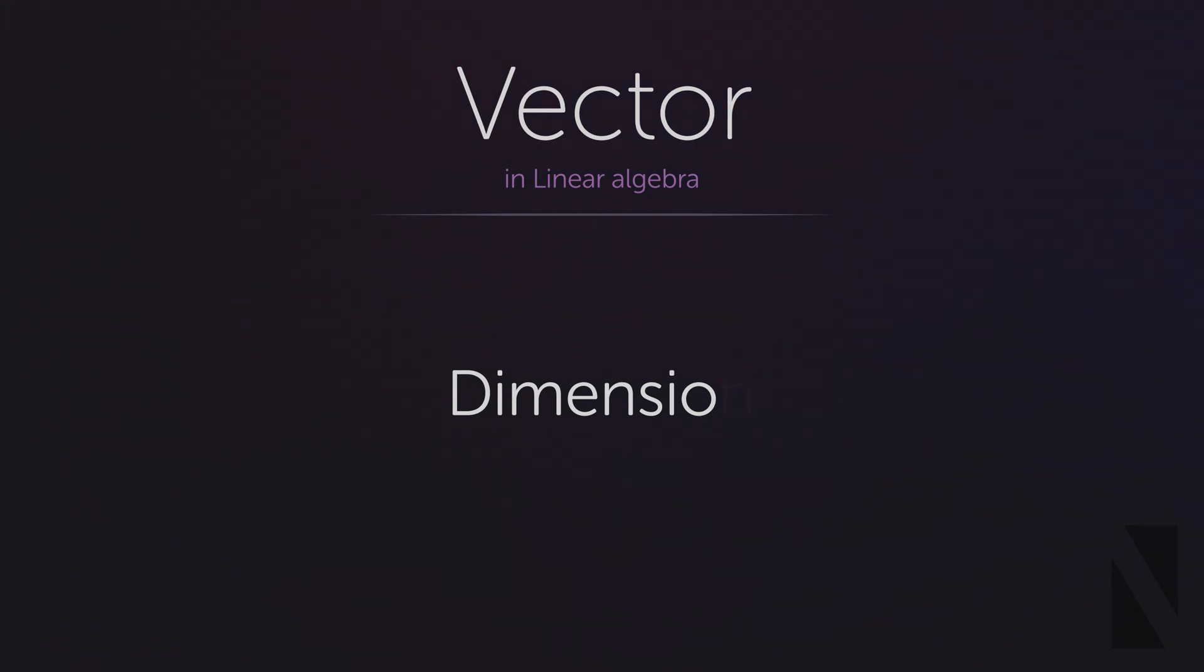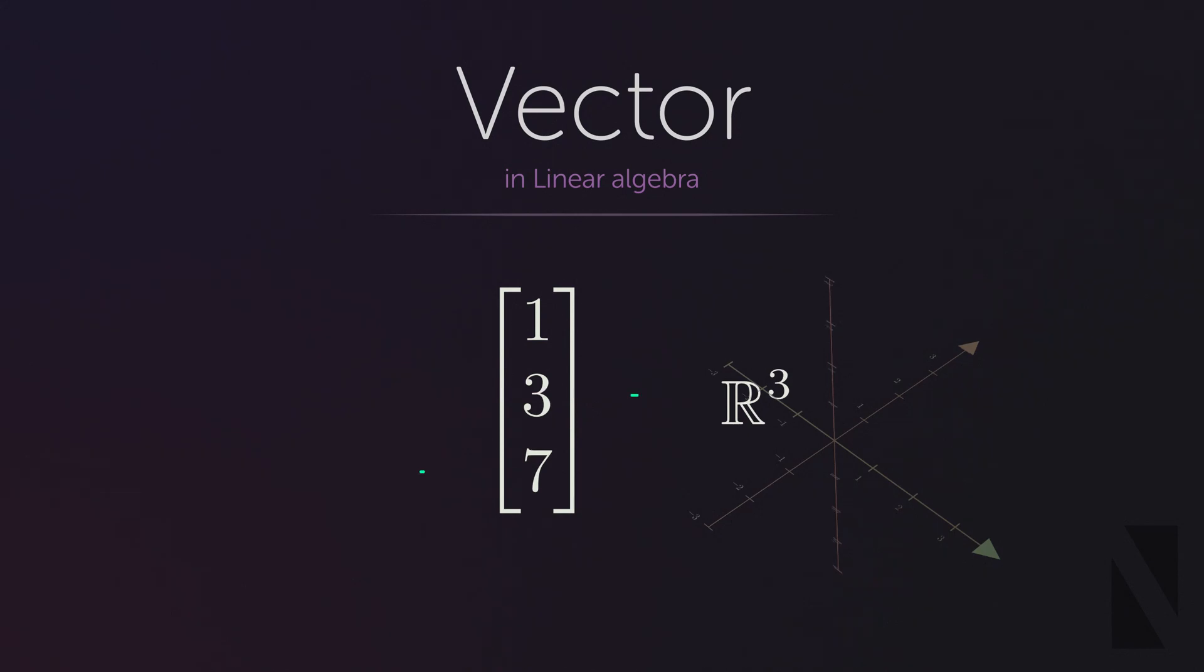But what do we know about dimensions so far? We know that in vectors dimension represents the number of elements inside a vector which shows the number of axes we have in our coordinate system. As we discussed before, dimension is indicated using R and we show the number of dimensions alongside the letter R.